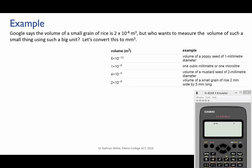Okay, last example. Google says that the volume of a small grain of rice is 2 times 10 to the minus 8 meters cubed. But who wants to measure the volume of such a small thing using such a big unit? Let's convert this value into millimeters cubed. The thing to realize here is that when you have a unit with an exponent like this, it means the same thing as it does with a number.